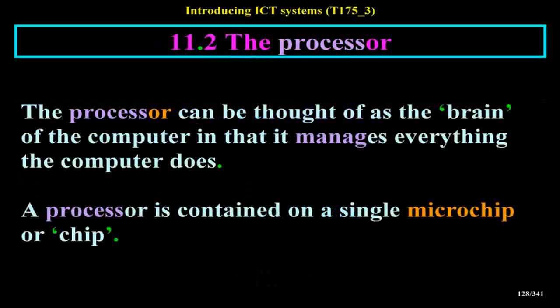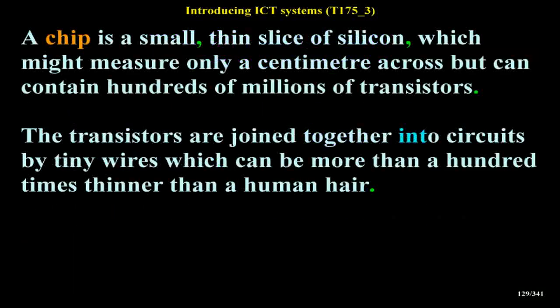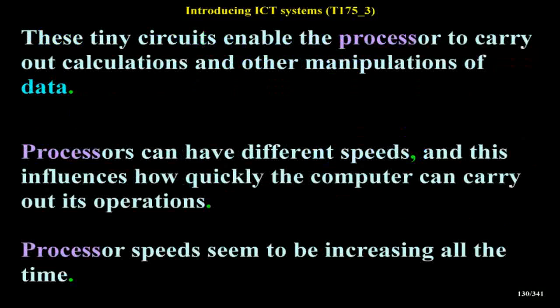The processor can be thought of as the brain of the computer in that it manages everything the computer does. A processor is contained on a single microchip or chip — a small, thin slice of silicon which might measure only a centimeter across but can contain hundreds of millions of transistors. The transistors are joined together into circuits by tiny wires which can be more than a hundred times thinner than a human hair. These tiny circuits enable the processor to carry out calculations and other manipulations of data.